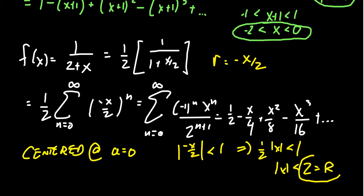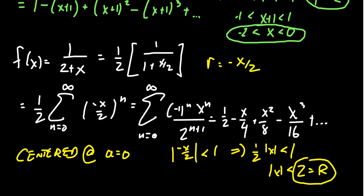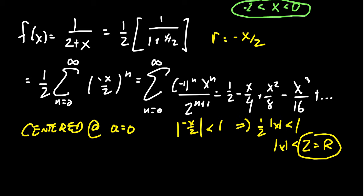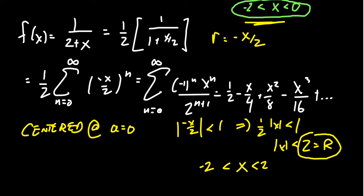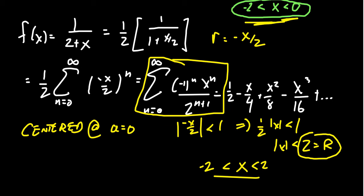We can already see a difference here: the radius of convergence when centered at zero is twice the radius of convergence compared to when we centered at -1. A bigger radius of convergence is a good thing — it means our power series representation equals 1/(2+x) for more values of x. The interval of convergence is -2 < x < 2. Compare that to before: the previous interval was from -2 to 0, but this one is from -2 to 2. This interval includes the entire previous interval plus twice as much, giving us the maximal interval of convergence.